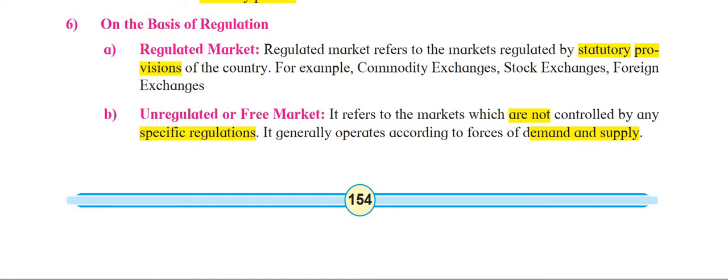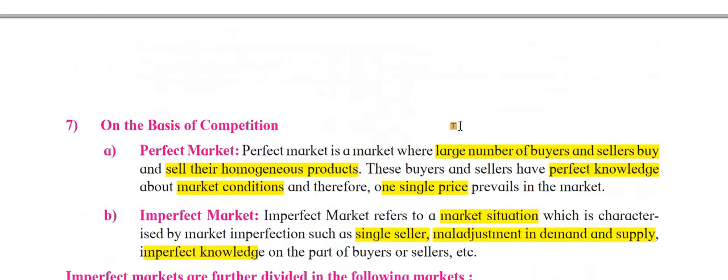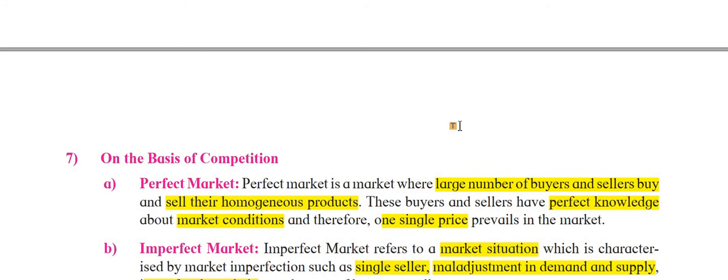The second under this classification is unregulated or free market. It refers to markets which are not controlled by any specific regulations — no rules and regulations by the country or authorities. Here it operates according to the forces of demand and supply. That is why it is called an unregulated or free market.